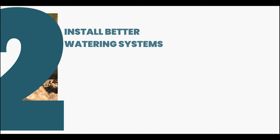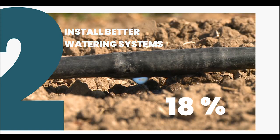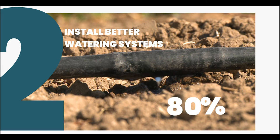Install better watering systems. Drip irrigation can save up to 80% more water and gets water directly to the plant's roots.